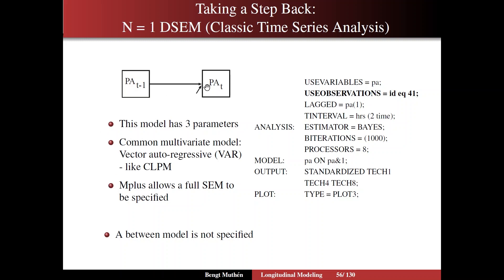So what does that Mplus input look like? We're considering one variable, and we add use observations ID equals 41. So we're taking a look at person 41 in our sample. We still have the lagged option, and we still have the t-interval option. But we don't do type equals two-level analysis. This is regular single-level analysis. Estimator is still Bayes, however. The model then is a single-level model specification, PA regressed on PA at a previous time point, lag one. Very simple to do.